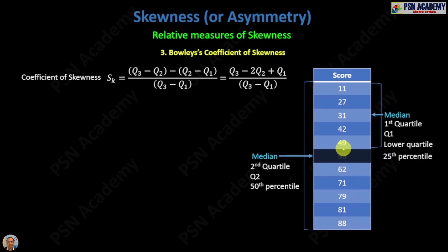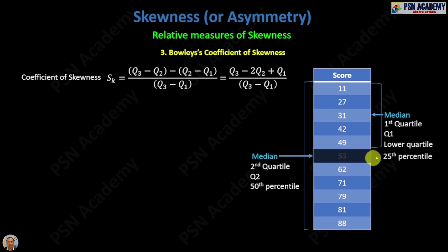You count: one, two, three, four, five — so five items are below 53. You find the percentage of 5 out of 11, and that will be the percentile of 53, which talks about a ranking. A detailed idea on percentile will be covered when we discuss Kelly's coefficient of skewness — the fourth relative measure — which utilizes the concept of percentile.